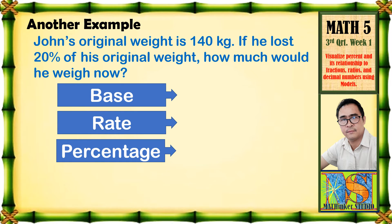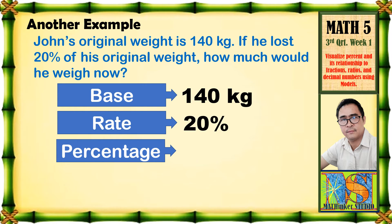Another example. Basahin natin: John's original weight is 140 kg. If he lost 20% of his original weight, how much would he weigh now? Aalamin natin kung nasaan ang base, rate, at percentage. Sa problem natin, ang ating base ay 140 kg, dahil ito ang kabuoang timbang o original weight ni John. At ang rate natin ay 20%, dahil nabawasan siya ng 20% sa original weight nito.